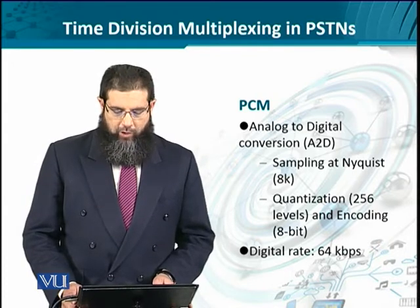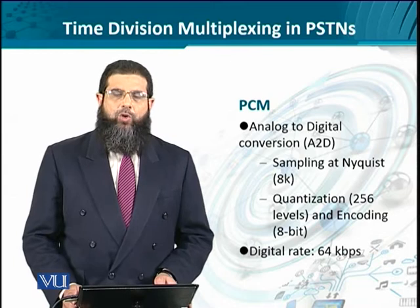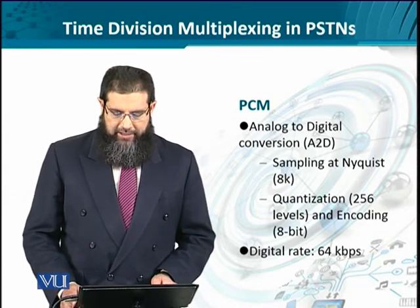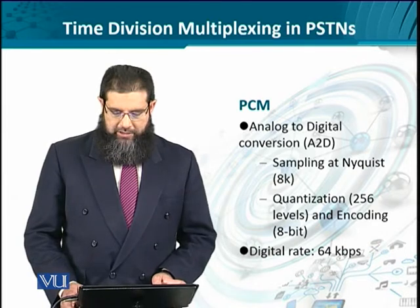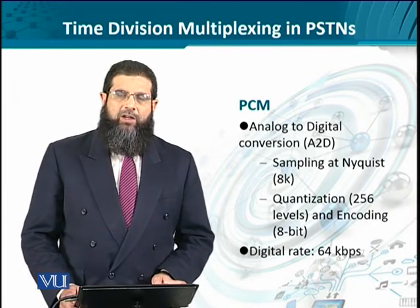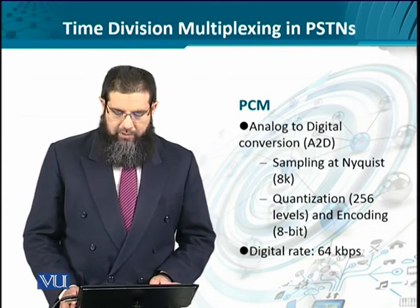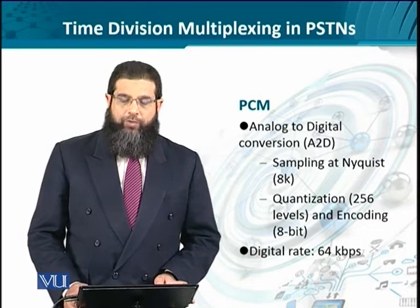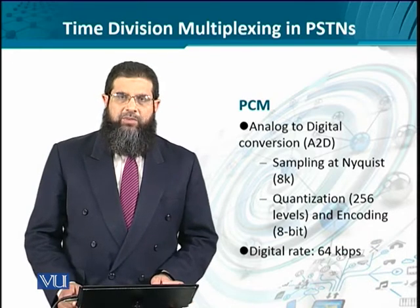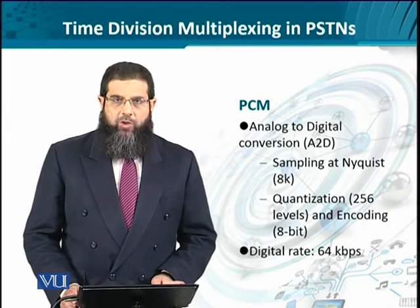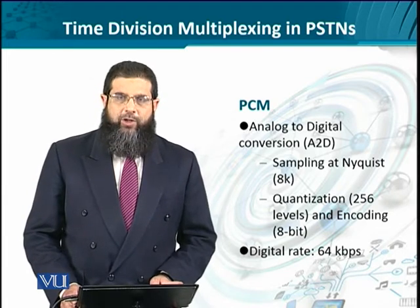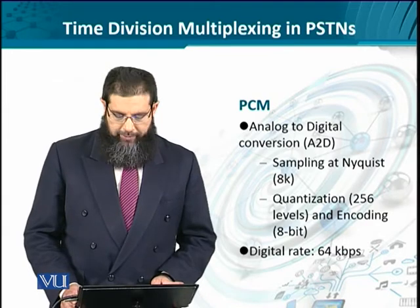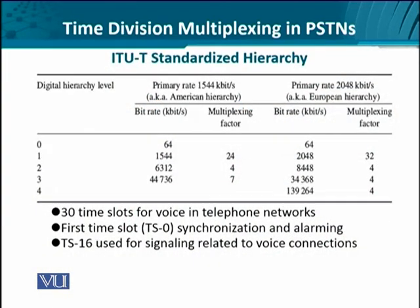Pulse code modulation, or PCM, is the analog to digital conversion technique that samples user analog voice data at the rate of 8,000 samples per second for a voice signal band-limited to 4 kilohertz. These samples are then quantized into 256 different levels, and each level is encoded using 8 bits. Consequently, for a user analog voice signal, a digital equivalent of 64 kilobits per second stream is obtained.